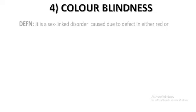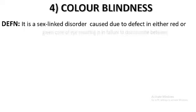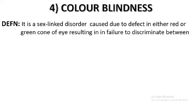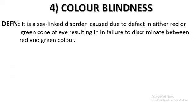The next disorder is color blindness. It is a sex-linked disorder caused by a defect in either red or green cones of the eyes, resulting in failure to discriminate between red and green color. It is a sex-linked recessive disorder. While not a major disorder leading to death, it can cause problems — for example, a person driving a vehicle may have difficulty distinguishing traffic signals.